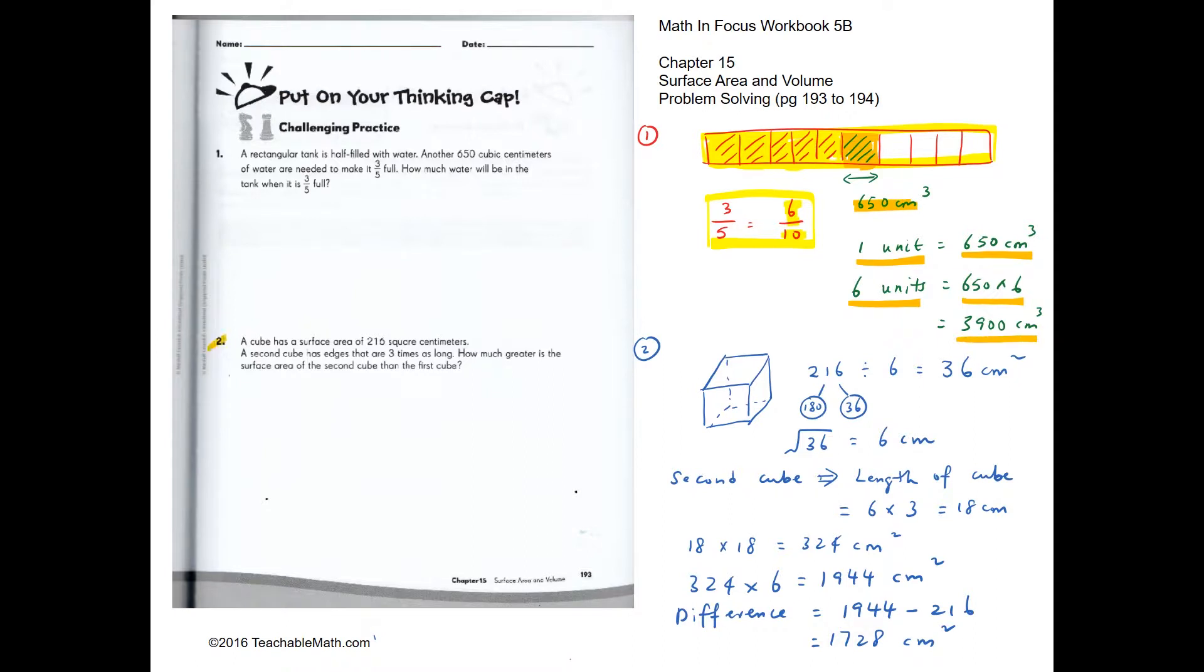Question 2: A cube has a surface area of 216 square centimeters. A cube has six faces and they're all the same. To find the area of one face, we take 216 divided by 6 and that will be 36.